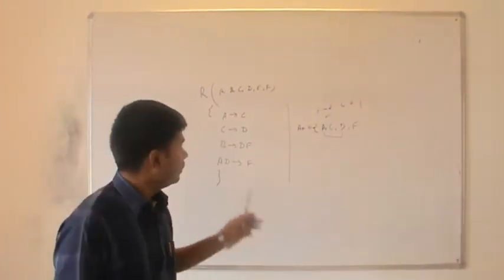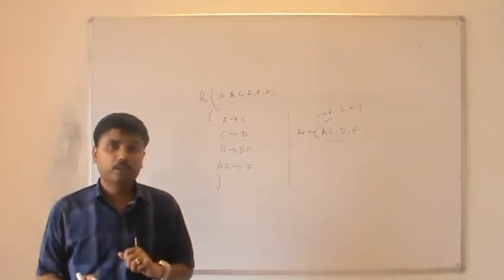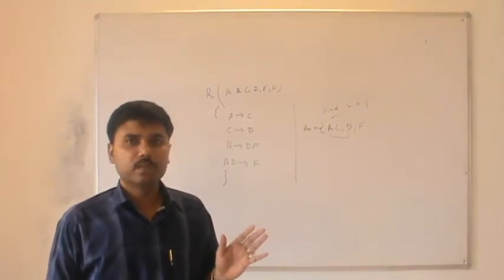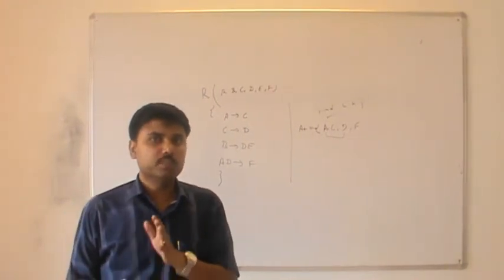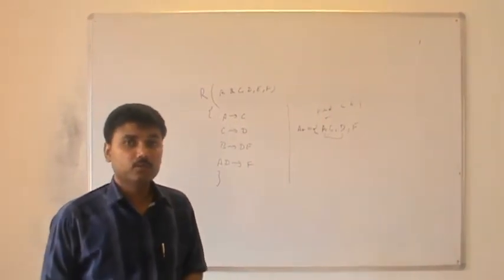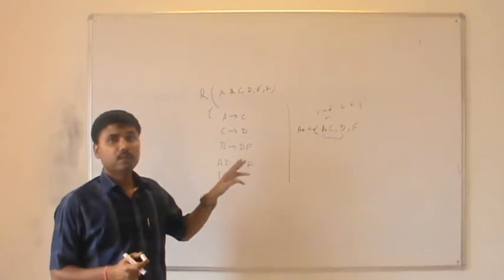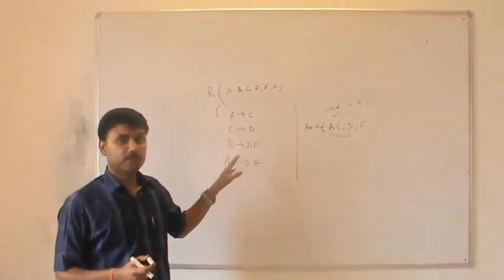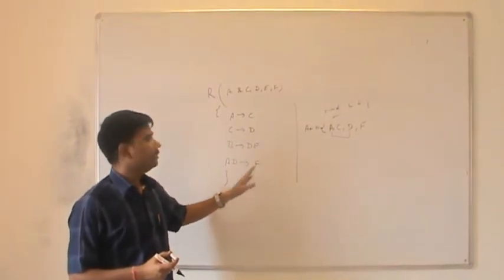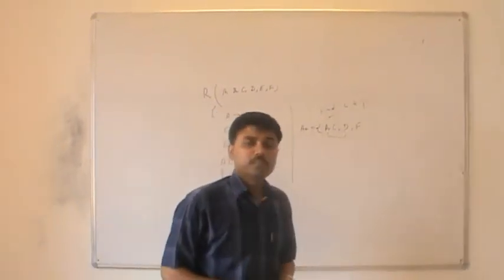Recall the important information shared earlier: if an attribute is completely unreachable from all other attributes in the relation, it will always be present in the candidate key. In this example, B is not on the right-hand side of any dependency, so B must be in the candidate key.